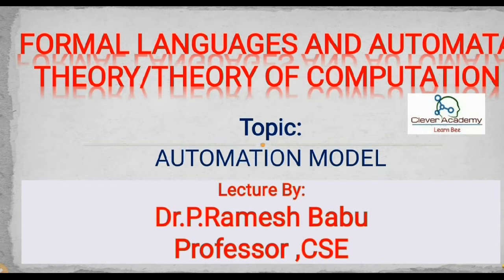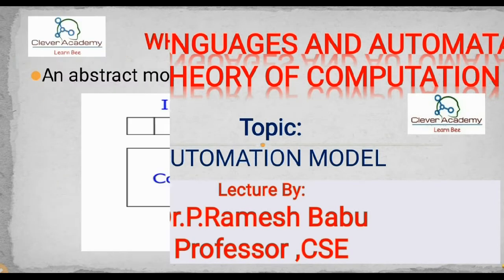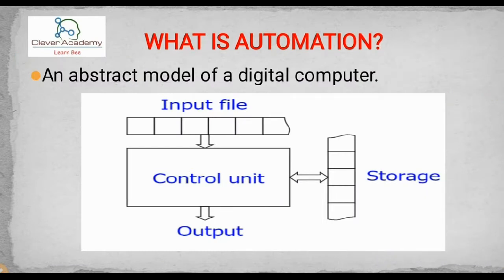We will discuss about the automation model. We have started the introduction related to formal languages — we learned what is formal language and what is automata theory. Now we are moving into the actual concepts. In the previous class we discussed about the various kinds of languages. We have four categories of languages: type 0, type 1, type 2, and type 3.